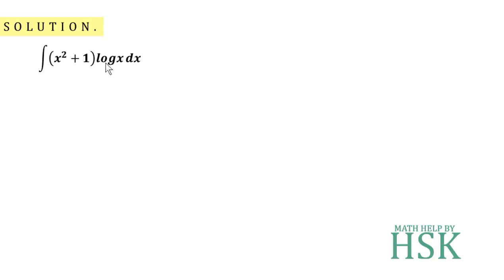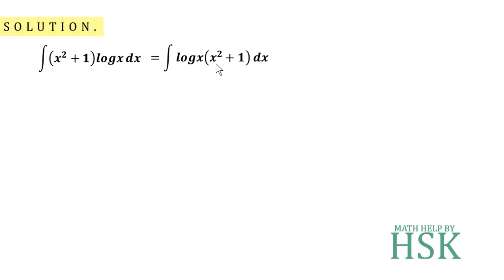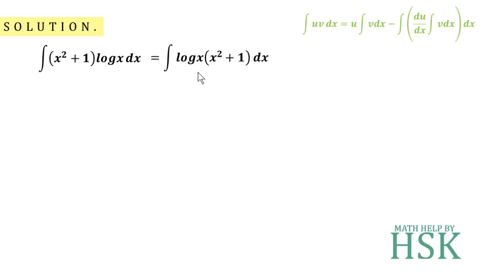To solve this, I'm going to take log(x) as the first function and (x² + 1) as the second function. This question is going to be solved by applying integration by parts. I write the function as log(x) into (x² + 1), denoting log(x) as the first function and (x² + 1) as the second function. There's the formula for integration by parts.